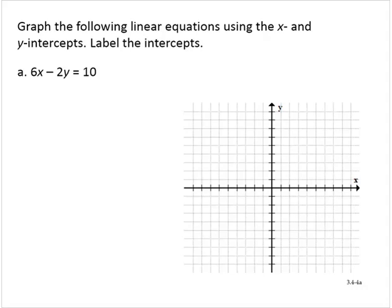We're asked to use the intercepts, so let me find the x-intercept. We let y equal 0. I'd have 6x minus 2 times 0 equals 10. 2 times 0 is 0. 6x minus 0 is 6x equals 10.